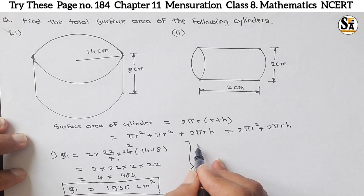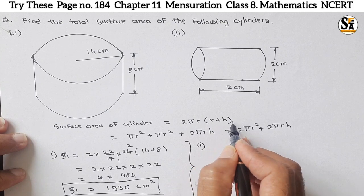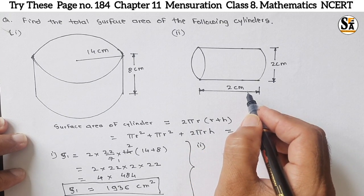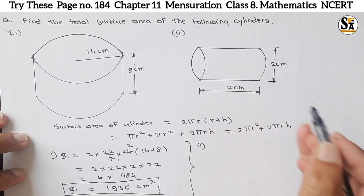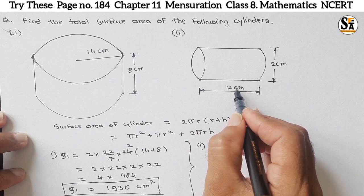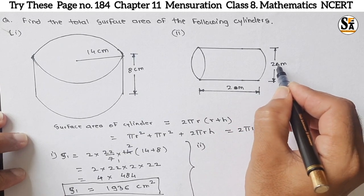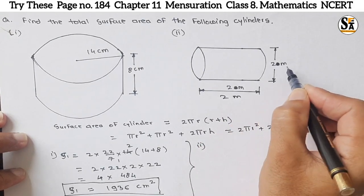Now similarly, find the surface area of the second cylinder. Use this formula 2πr(r+h). Put the values of r and h which are different. Now see here, the unit is meter. This is 2 meter and this is also 2 meter.